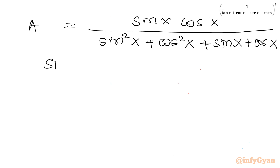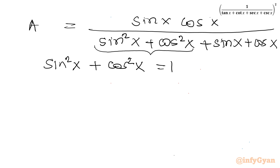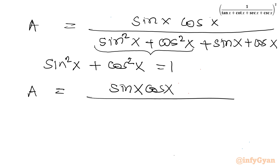Now I will apply one very strong and powerful trig identity: sin² x + cos² x = 1. Applying this, A becomes sin x · cos x / (1 + sin x + cos x).